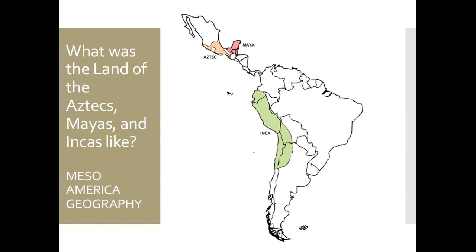Hello ladies and gentlemen, and welcome to today's screencast about the geography of what we call Mesoamerica. Today's essential question is: what was the land of the Aztecs, Mayas, and Incas like? The Aztecs, Mayas, and Incas are the three most important civilizations of what we refer to as Mesoamerica, which is basically all of the areas south of the United States where indigenous peoples were once the only population group to live there before the Europeans arrived.